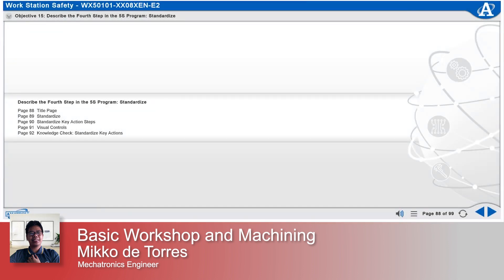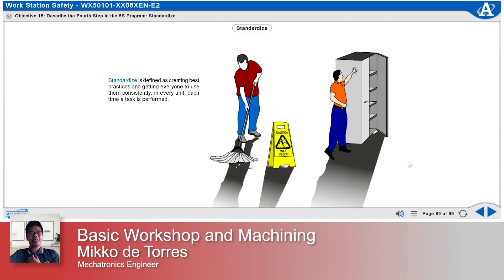Describe the fourth step in the 5S program: Standardize. Standardize is defined as creating best practices and getting everyone to use them consistently in every unit each time a task is performed.